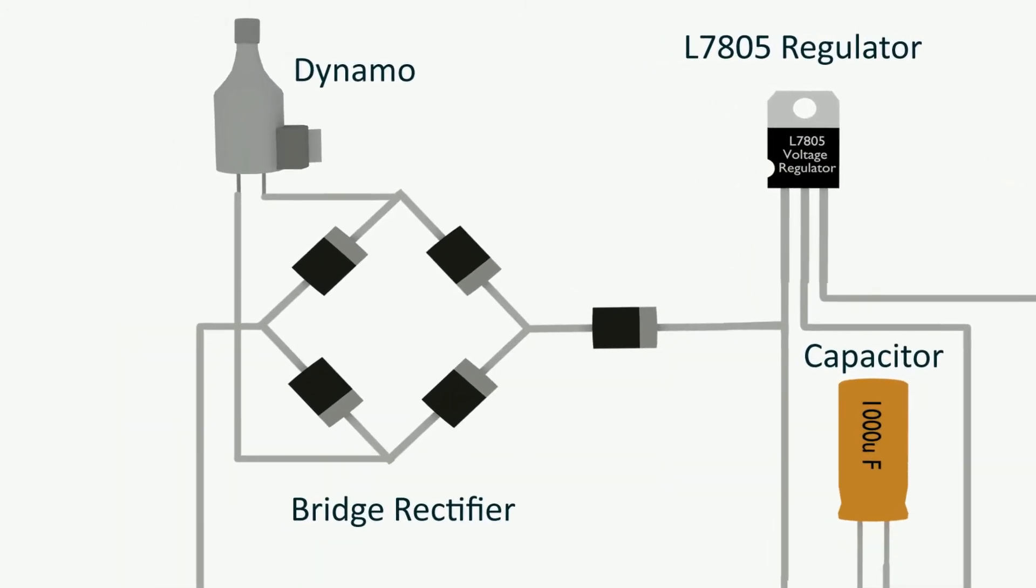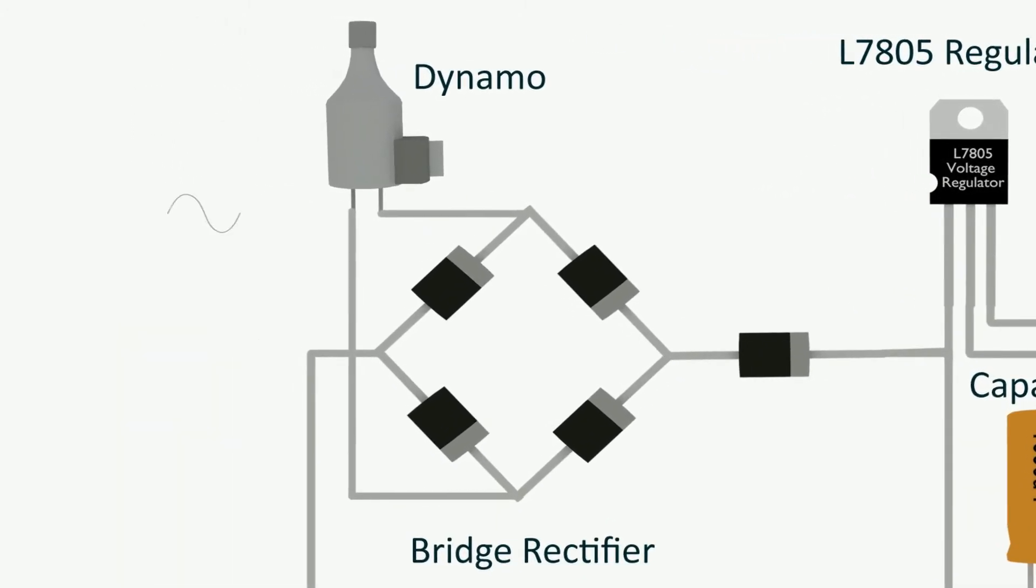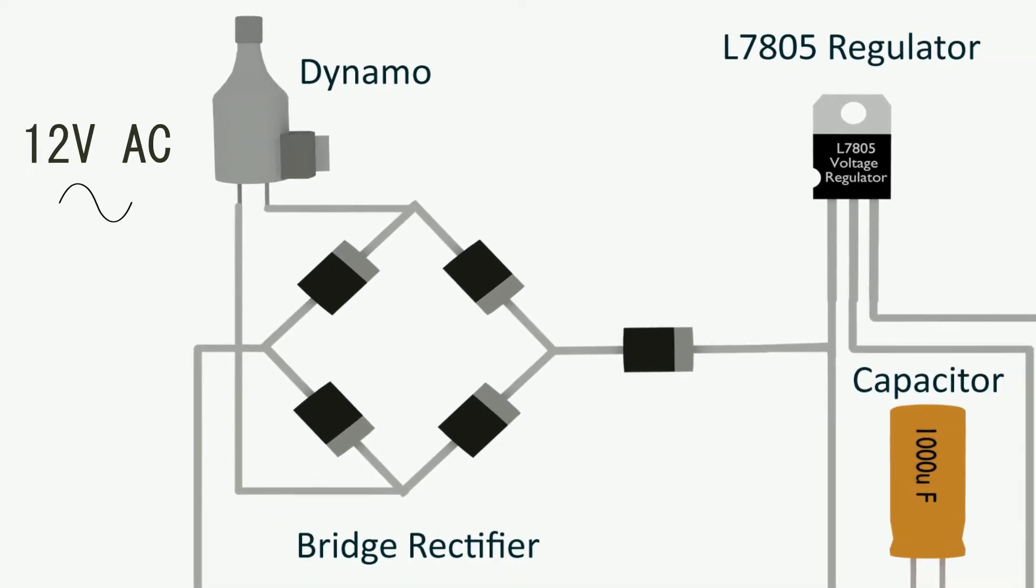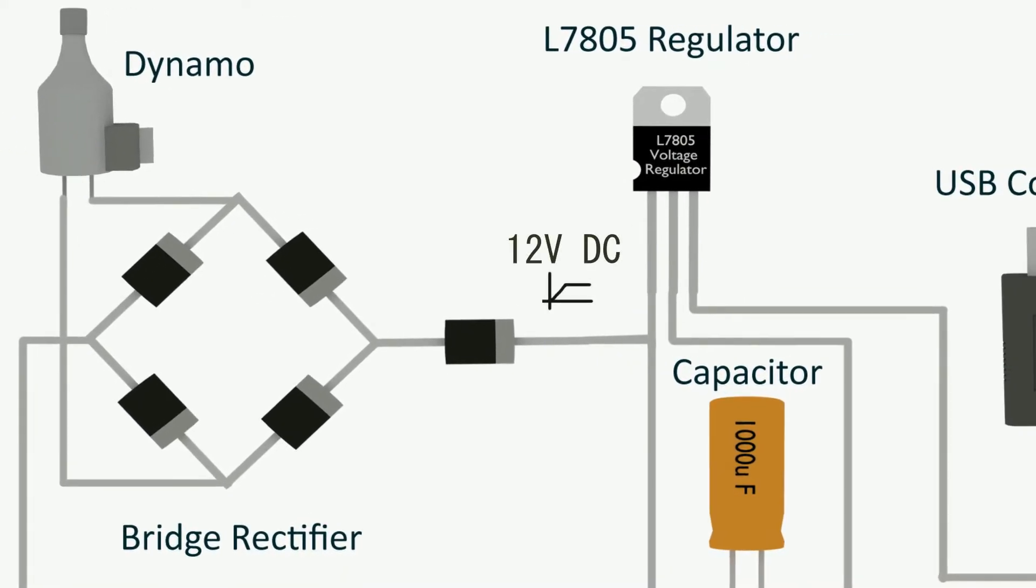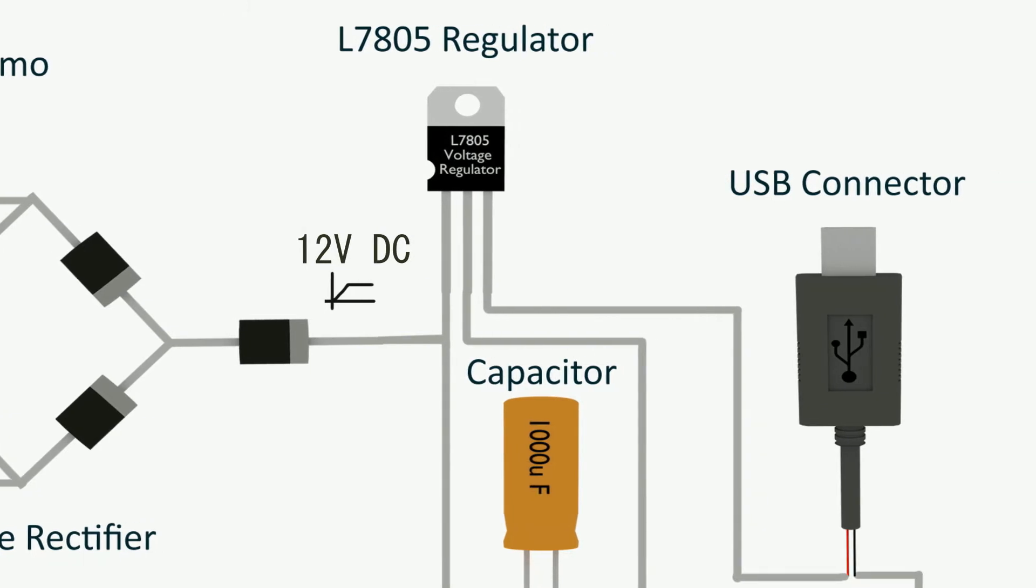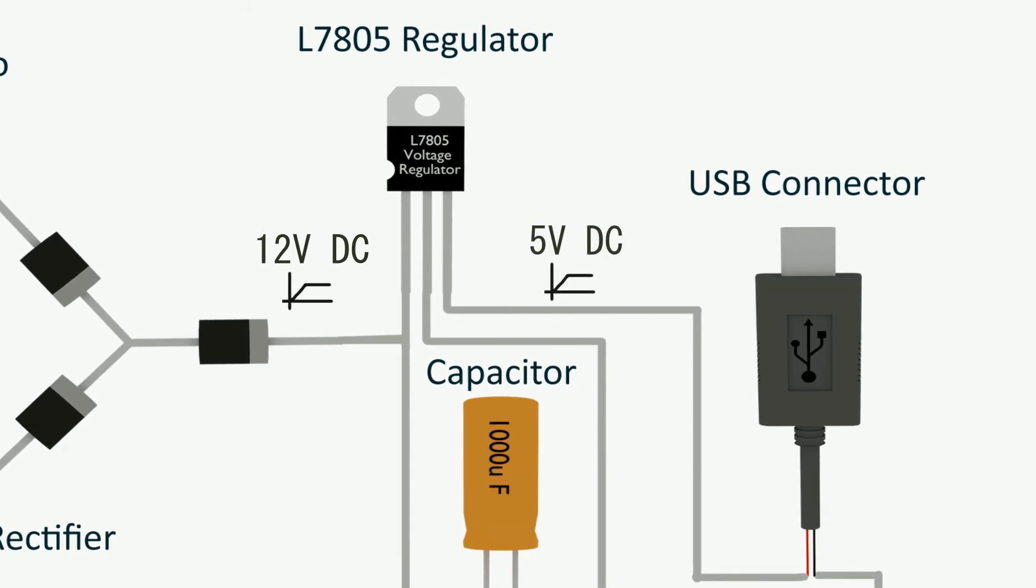Dynamo generates 12V AC power. Rectifier converts it to 12V DC. Voltage regulator gives steady 5V DC power which powers the cell phone.